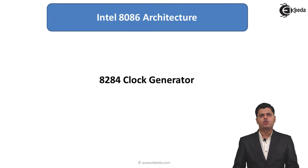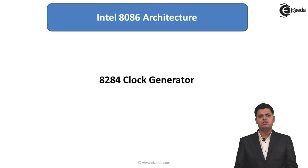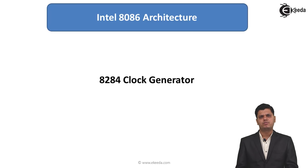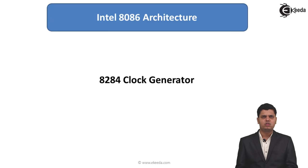In this lecture we are going to see the 8284 clock generator. Until now we have seen the different parts of the 8086 microprocessor. The main thing when using a digital system is clock generation, because synchronous circuits require a clock. In the 8086 there is no internal clock circuit, so we require the 8284 clock generator to provide the clock frequency to the different blocks.